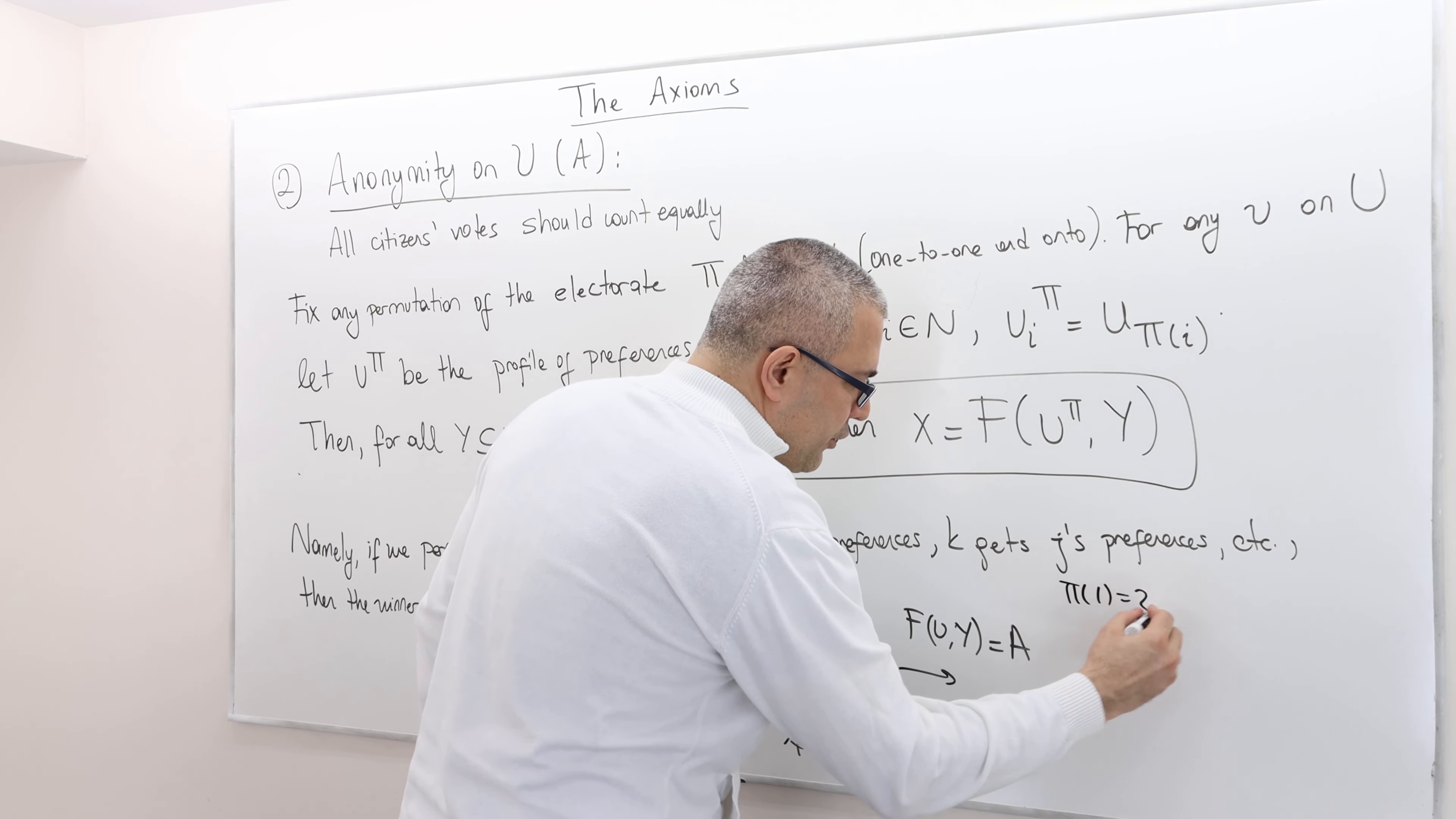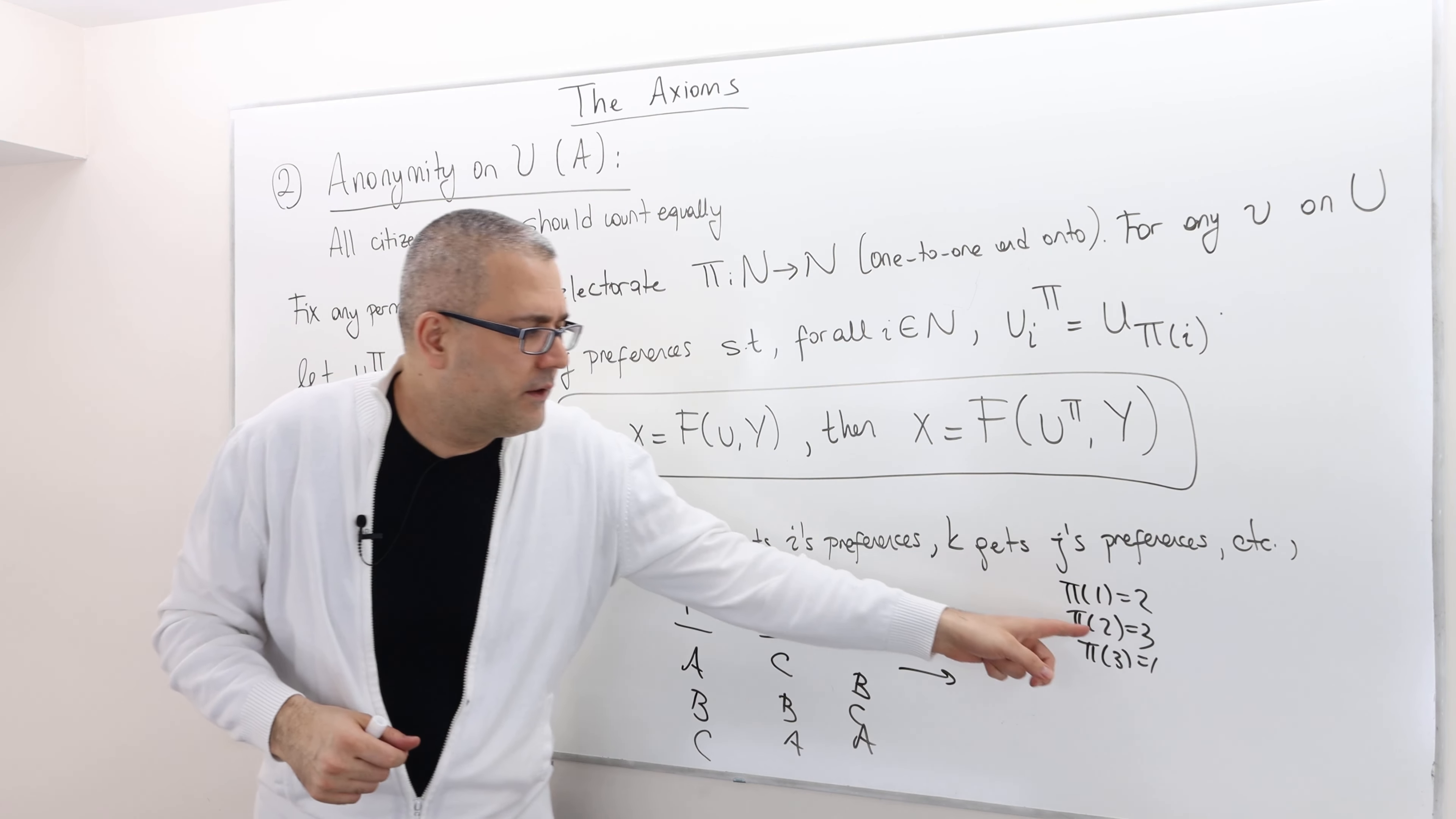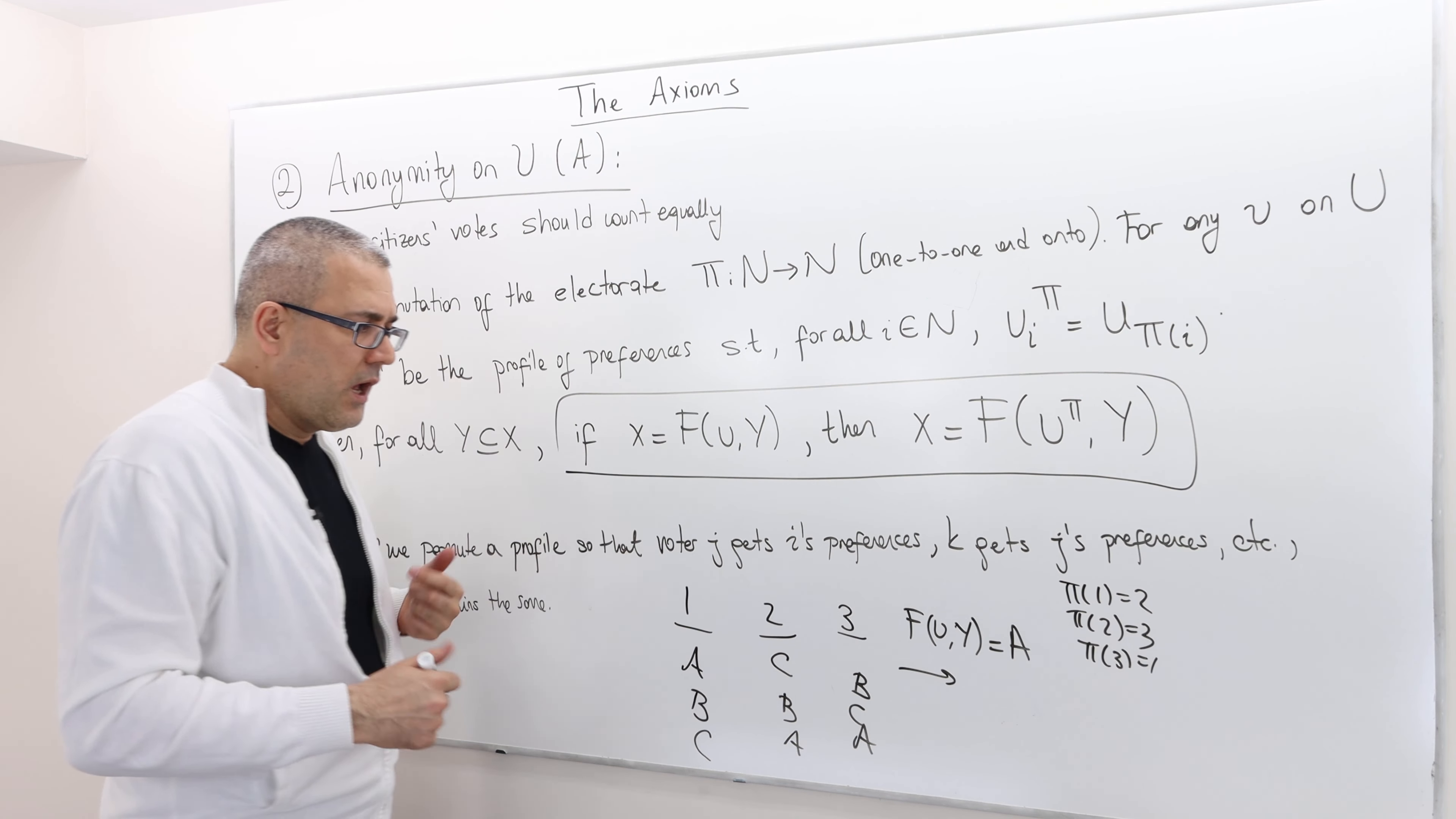Pi one is two, pi two is three, and pi three is one. So basically the new voter two is actually old voter one. The new voter three is old voter two, and the new voter one is the old voter three. This is how I permute.